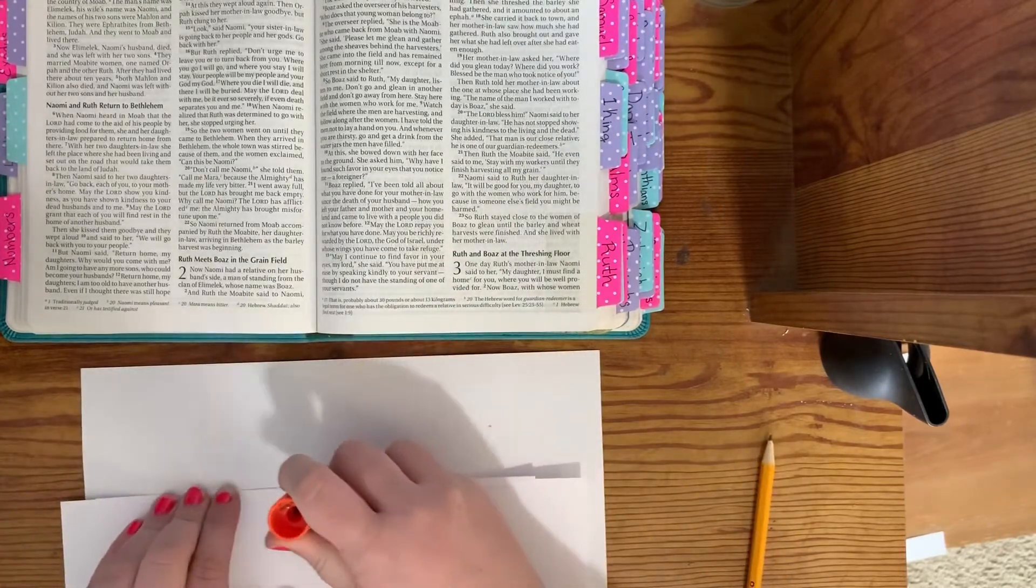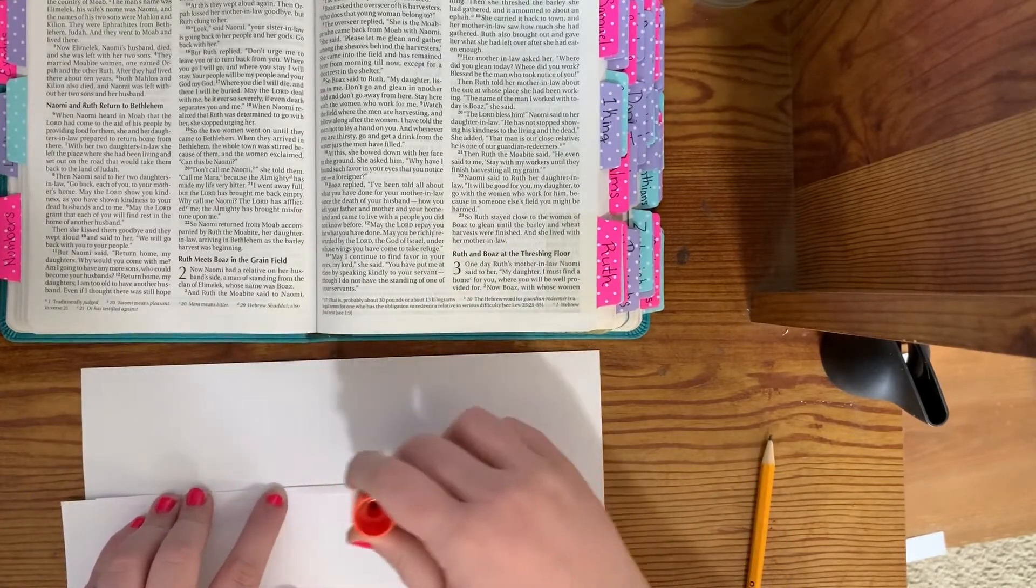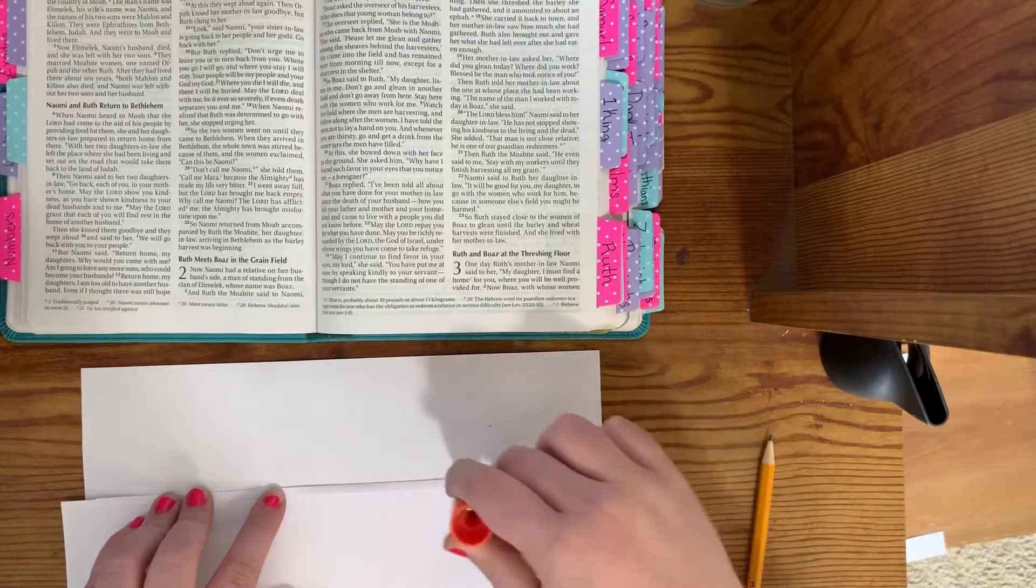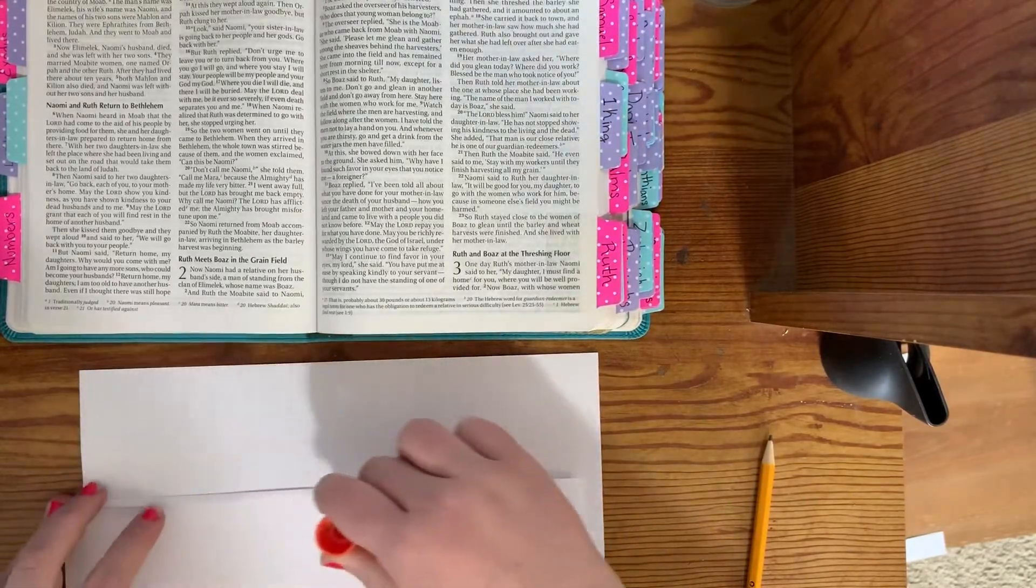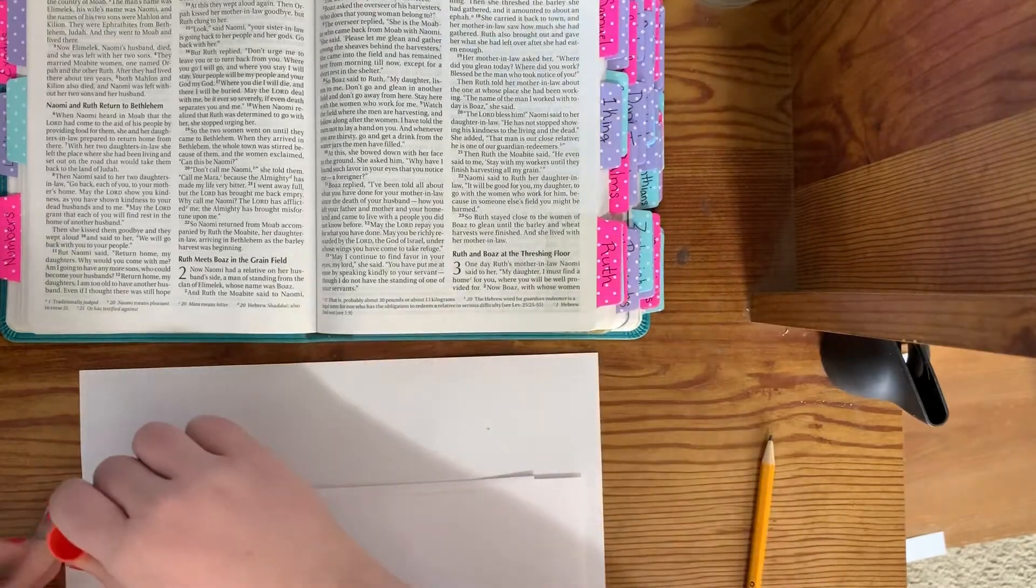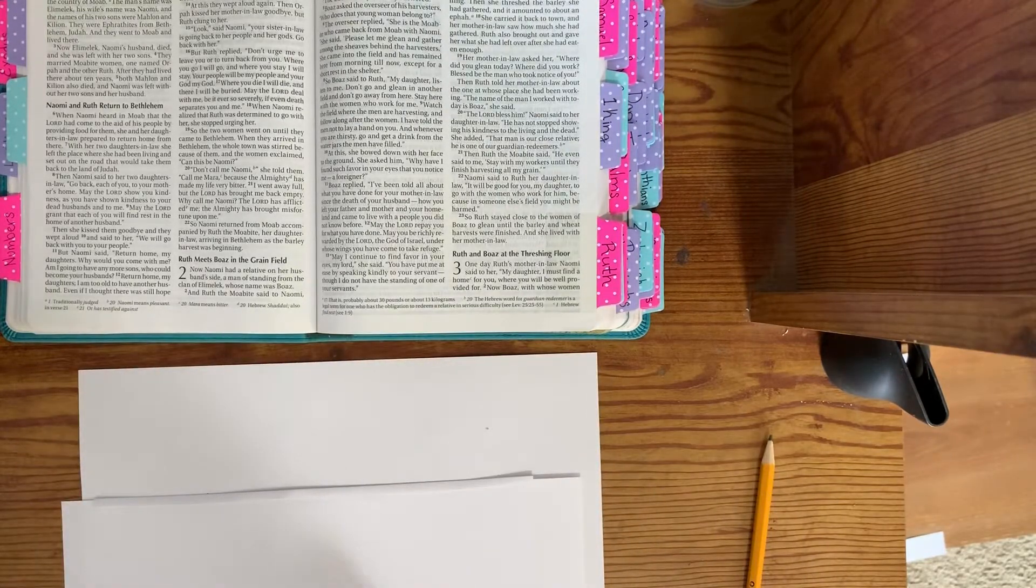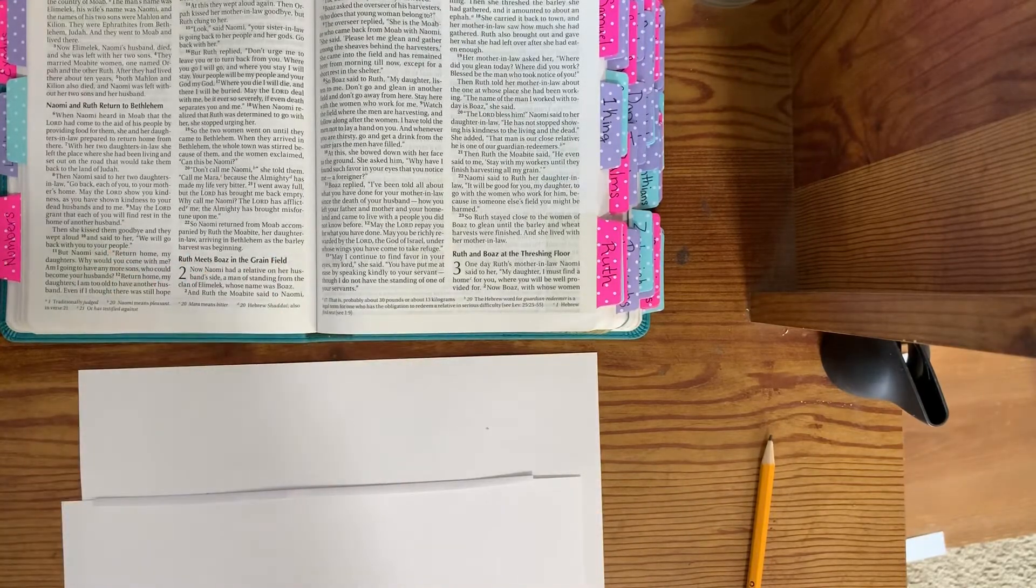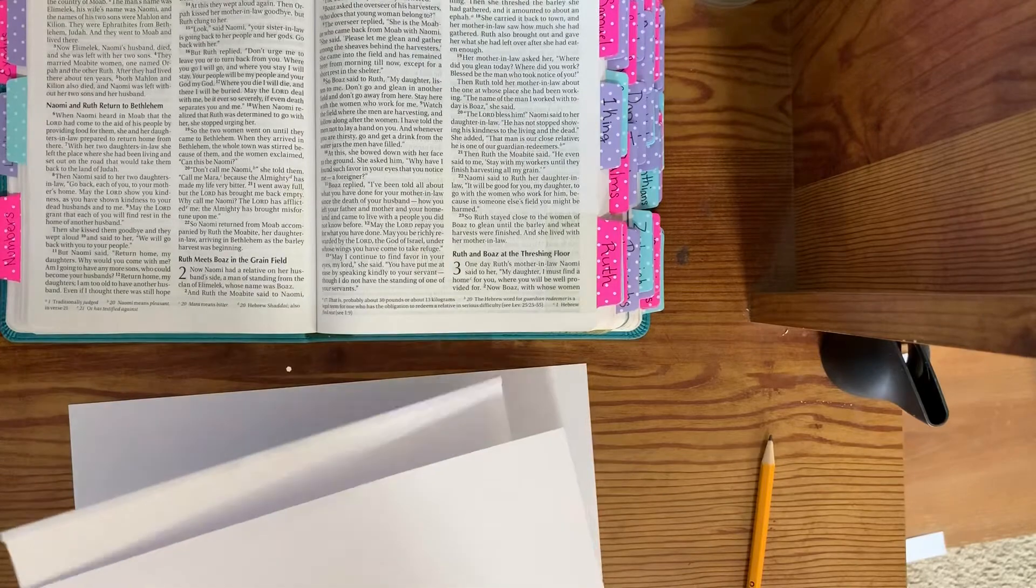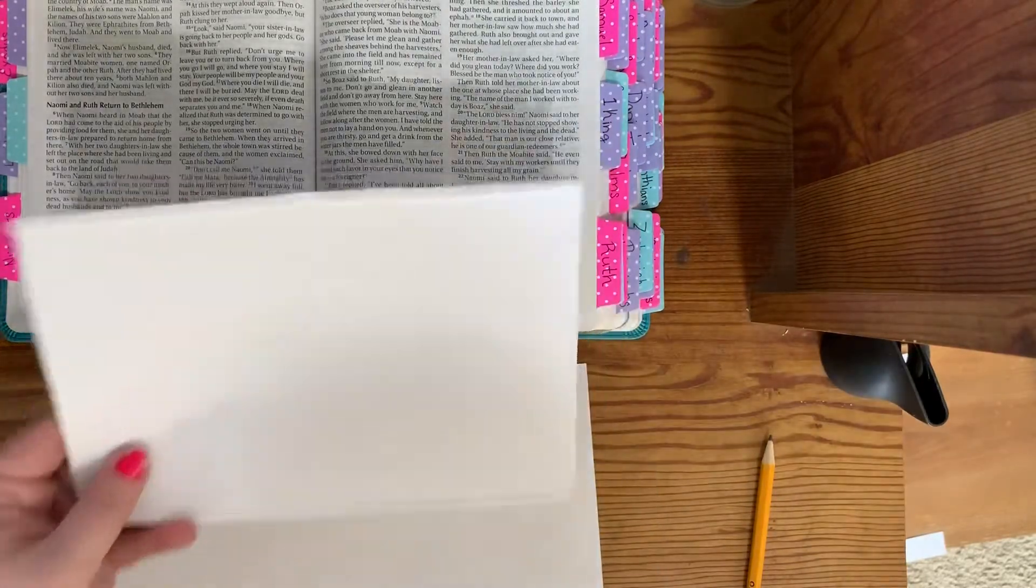Now I'm just going to run my glue stick down here like so, all the way across that little lip like that. Close my glue back, and I like to grab it up here rather than down by that fold.